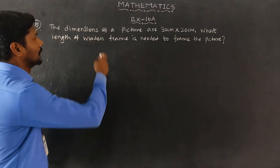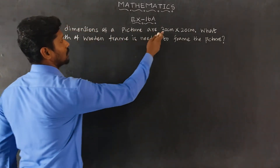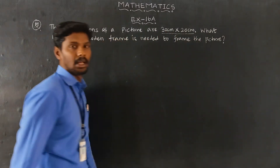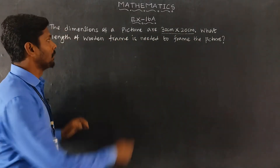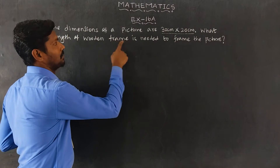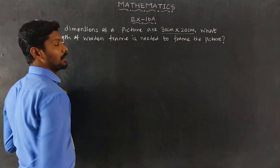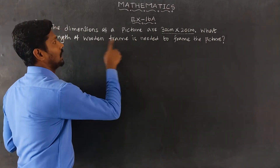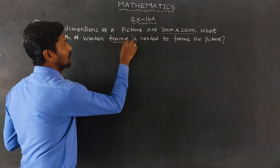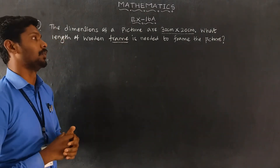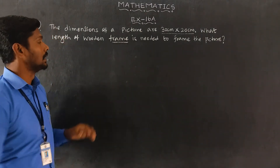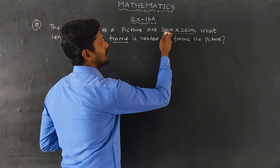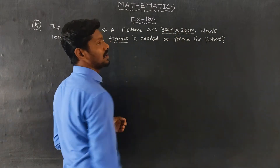The dimension of the picture is 30cm x 20cm. These are different dimensions — 30cm x 20cm — forming a rectangle.